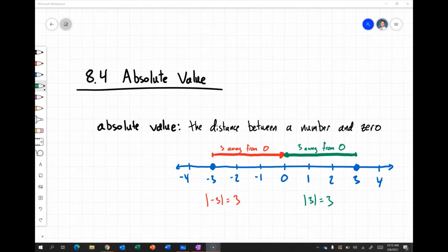Now you'll notice both of these numbers are three units away from zero. Negative three is three units away from zero, and positive three is three units away from zero.